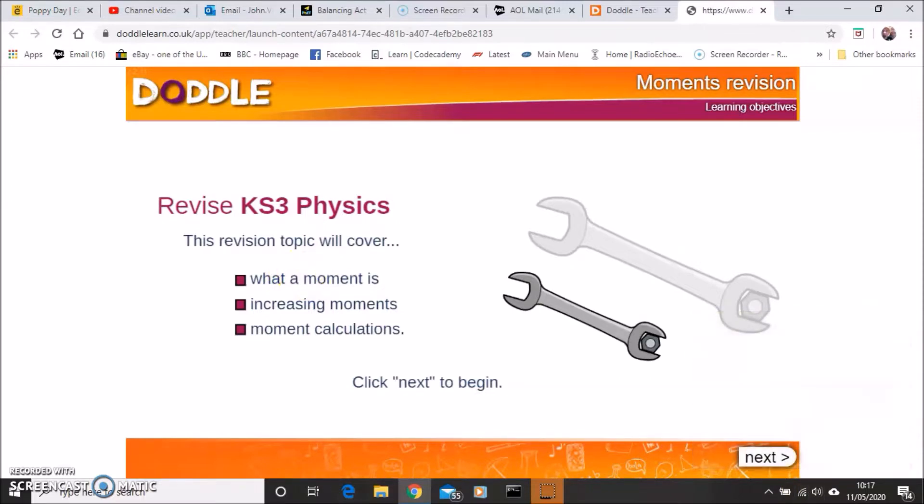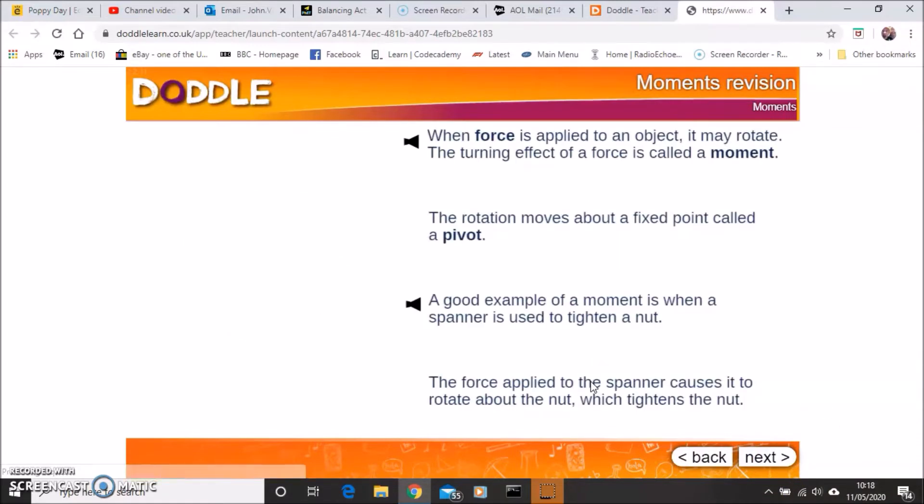First of all, what a moment is. This little revision page I've taken from Doddle, and I would suggest after watching this video that you actually go away and explore this resource yourself. A moment really is a turning force. And as we can see here on the screen, an example of that would be undoing a nut and bolt. We use a spanner to do that.